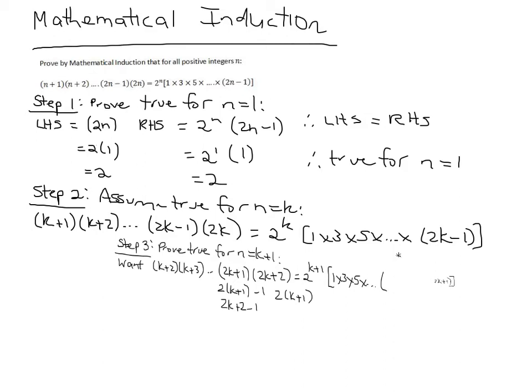So it's 2 to the k into 1 times 3 times 5 times 2k minus 1. And we're going to divide that by k plus 1.